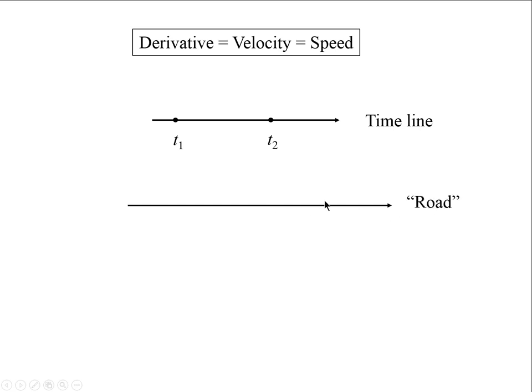It's along this road our point will be moving. So at time t1 it could be here, P(t1). At time t2 it could be here, P(t2).